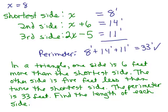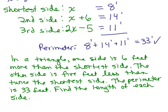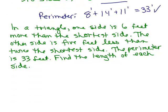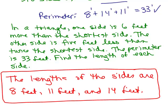So we now just need to write our answer now that we've checked our work. The lengths of the sides, it says find the 3 sides, find the length of each side. So all we do is write down our answer. The lengths of the sides are 8 feet, 11 feet, and 14 feet, and we're done.